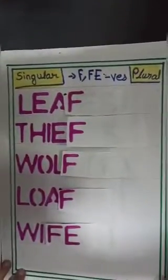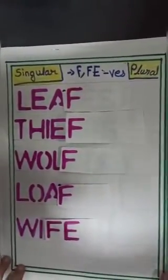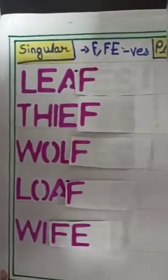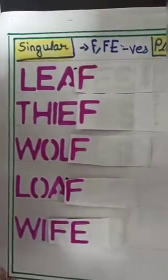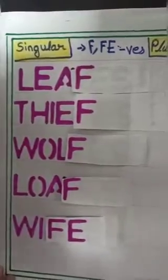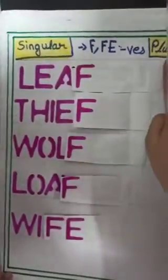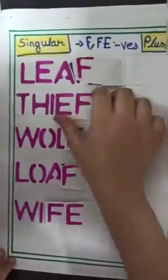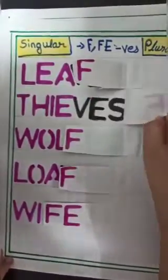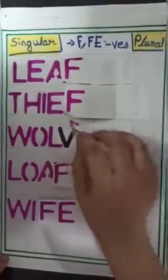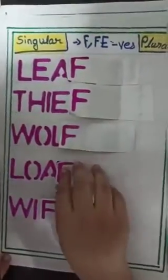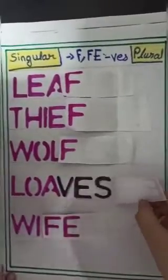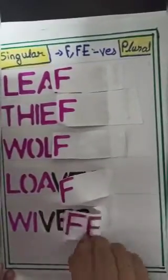Rule number 4: For the noun, replacing F or FE with VES. Plural, singular. Leaf, leaves. Thief, thieves. Wolf, wolves. Loaf, loaves. Wife, wives.